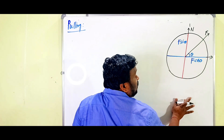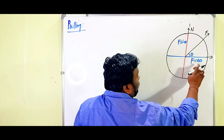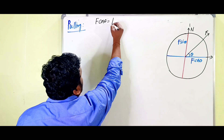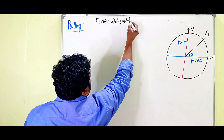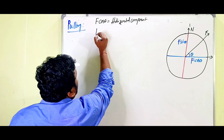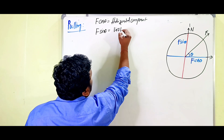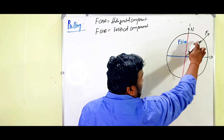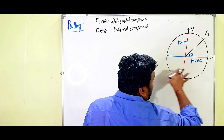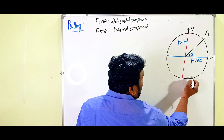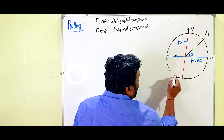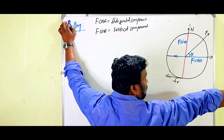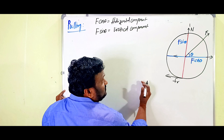According to the resolution of vectors, that force can be divided into two components: F cos theta, which is the horizontal component of force, and F sin theta, which is the vertical component of force. Due to the applied force F, the roller is moving in the forward direction, so the frictional force acts in the opposite (backward) direction.